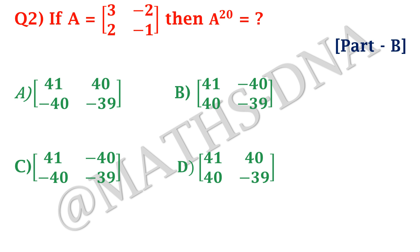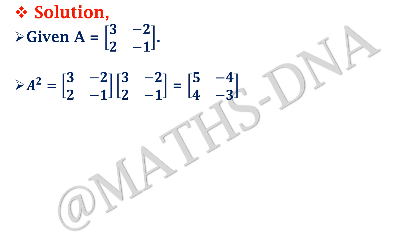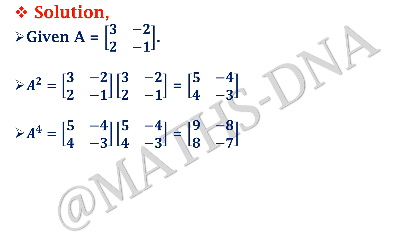This is a very simple and straightforward question if you know how to find patterns. It is given that A is a 2×2 matrix with entries 3, −2, 2, −1. First we find A² by multiplying the two matrices, getting [5, −4; 4, −3]. Continuing, A⁴ = A²·A² = [9, −8; 8, −7].